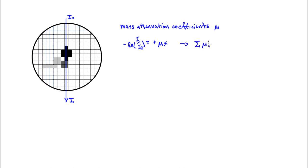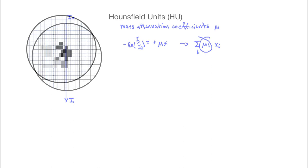What it is, is a sum — that ray is a sum over mu-i over all those pixels along that line. The mu-i is the linear attenuation coefficient in pixel i, where i goes 0, 1, 2, 3, 4 through the image. In CT, we don't represent the values as mass attenuation coefficients themselves — there's a special number called the Hounsfield unit.